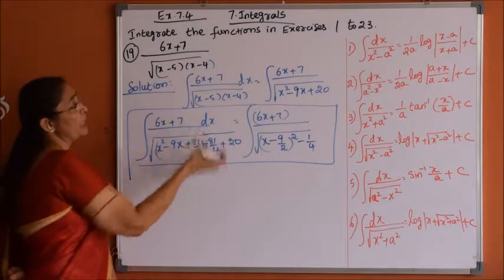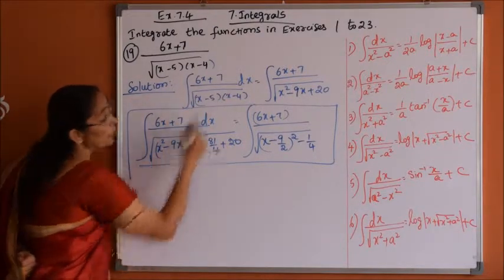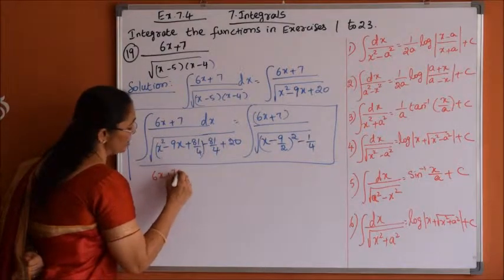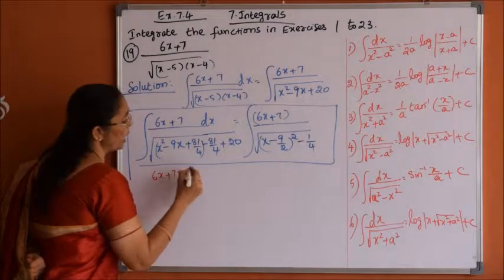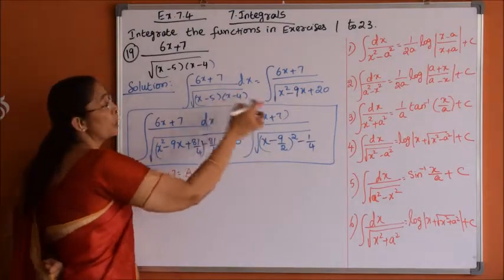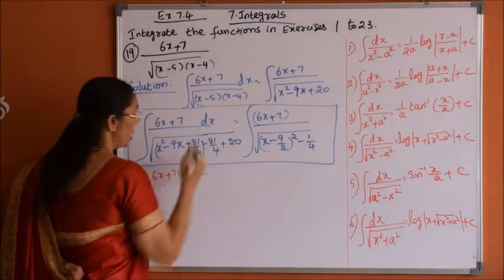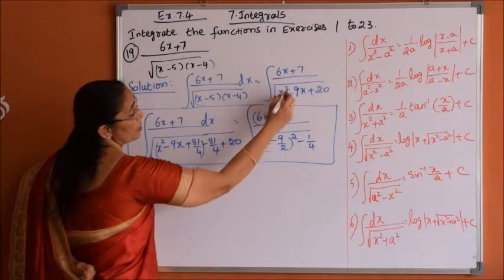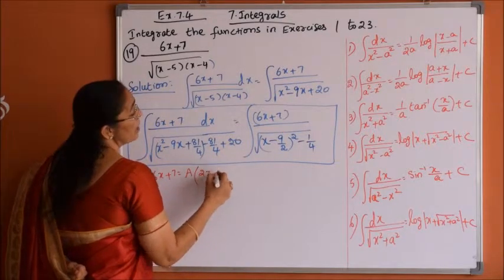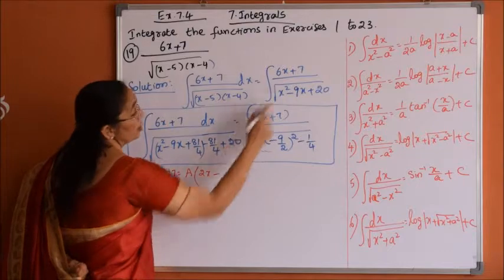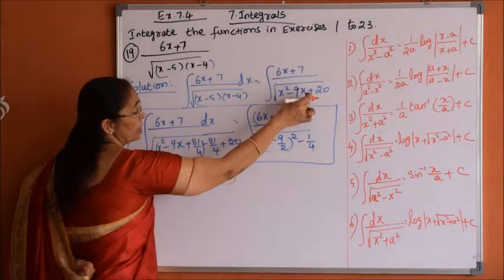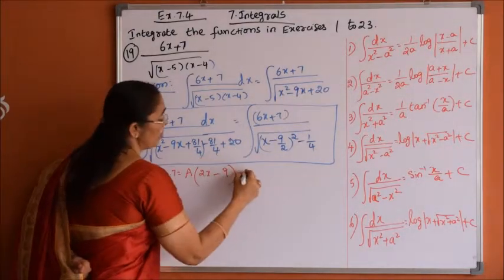Let me do that step now. We write that 6x + 7 equals a times the differentiation of the function inside the square root. Inside the square root we have x squared minus 9x plus 20, whose derivative is 2x minus 9. So: 6x + 7 = a(2x minus 9) plus b.